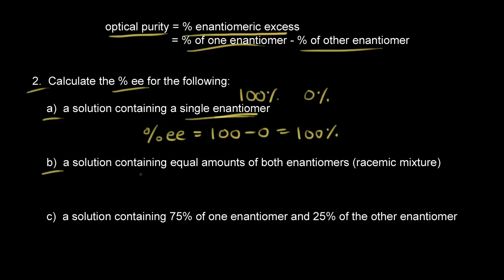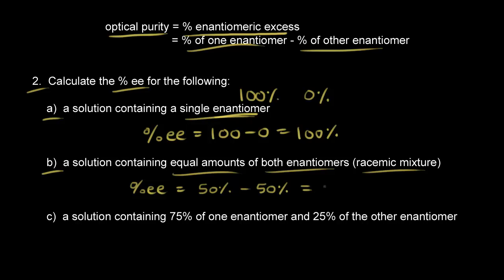For part B, let's do this for a solution that contains equal amounts of both enantiomers — called a racemic mixture. If we have equal amounts, that means 50% of one enantiomer and 50% of the other. So the percent enantiomeric excess equals 50 minus 50, which is 0. A racemic mixture has 0% optical purity and is not optically active.